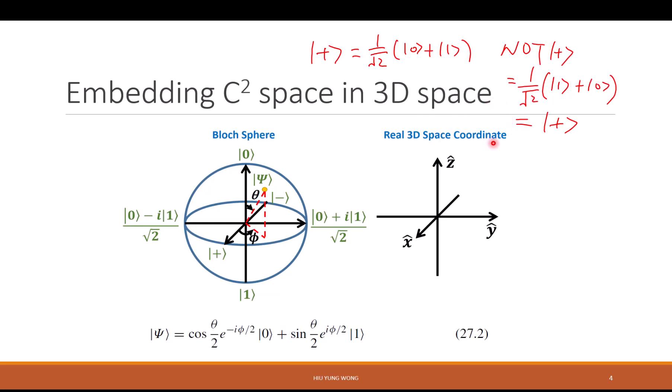We talked about the Bloch sphere, which is the embedding of the C² space after some simplification on the real 3D space. The most important thing to remember is that the wave function now becomes something characterized by two parameters, theta and phi.